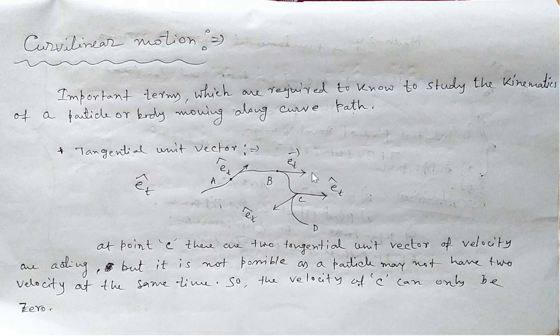Similarly, at b the tangential unit vector acts in that direction. At point c, you can see there are two possible tangents which can be drawn. One following the path this way, another that way. So at that point, the particle appears to have two velocities, which is not possible — at a certain moment a point may have only a single component of linear velocity. So at that point, the magnitude of the velocity must be zero. Whenever there are two possible tangents at a point, the velocity should be considered zero.